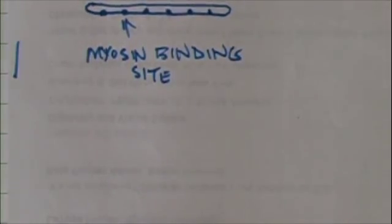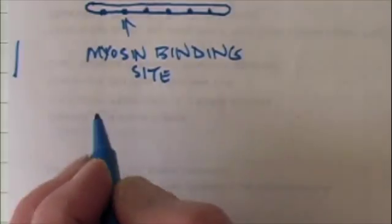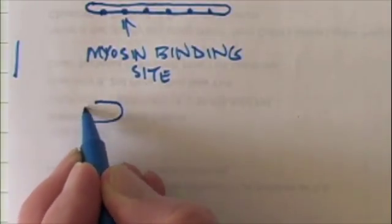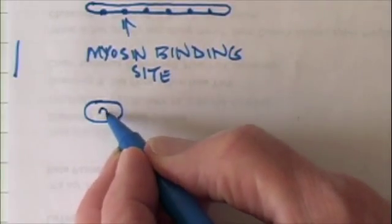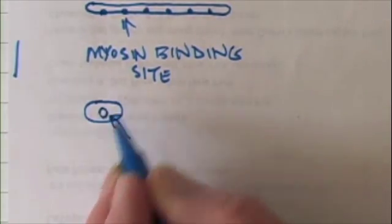In addition to that, the thin filaments contain troponin. Let's draw troponin as though it looks like this. Now it doesn't really look like that, but that's the way we'll draw it. Troponin also has a binding site for calcium.